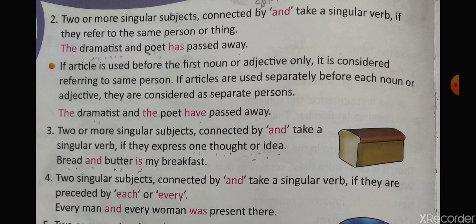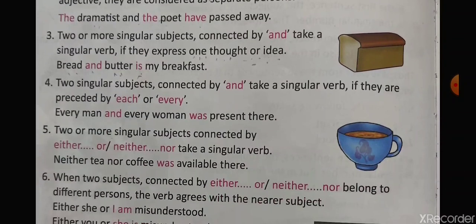Two singular subjects connected by 'and' take a singular verb if they are preceded by 'each' or 'every'. For example, 'Every man and every woman was present there.' Here, 'every man' is one singular subject and 'every woman' is another singular subject, so it is connected by a singular verb.